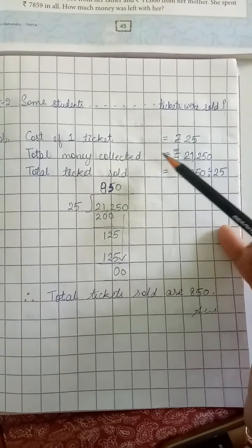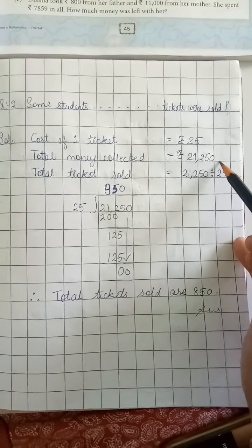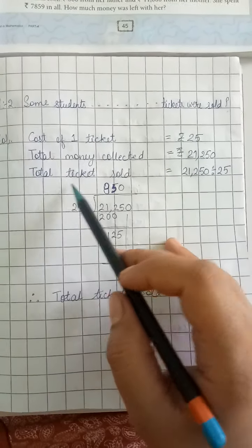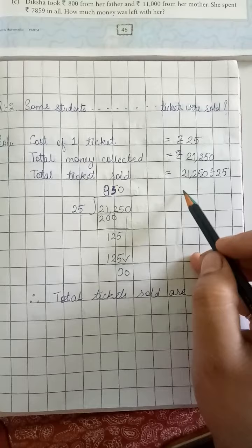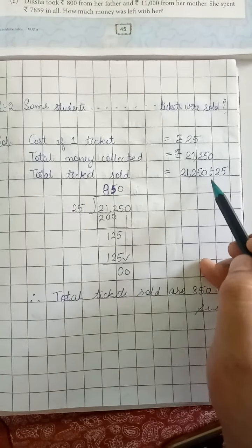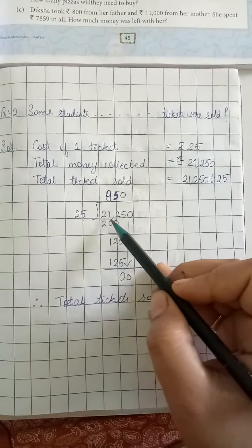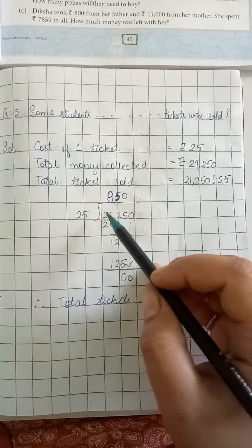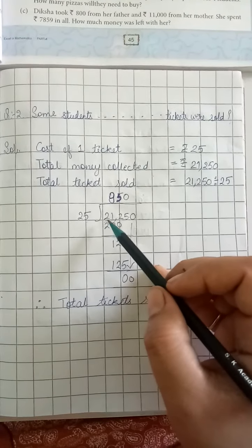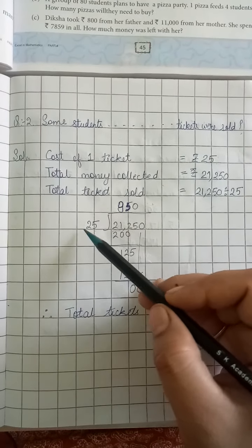We have to find out how many tickets were sold in total. Cost of one ticket is 25 rupees, total money collected is 21,250 rupees. To find total tickets sold, we divide total money collected by cost of one ticket. So 21,250 divided by 25.